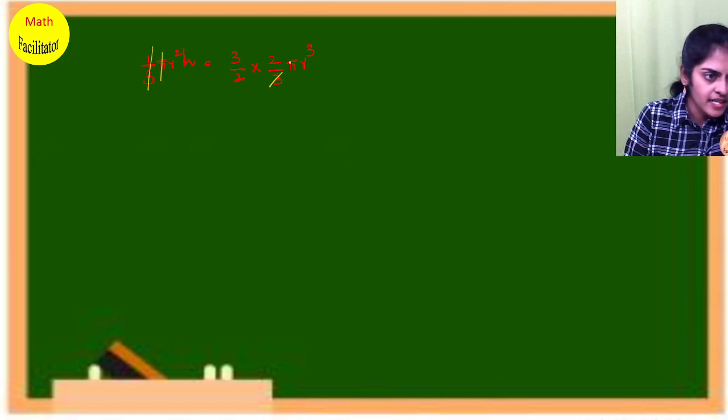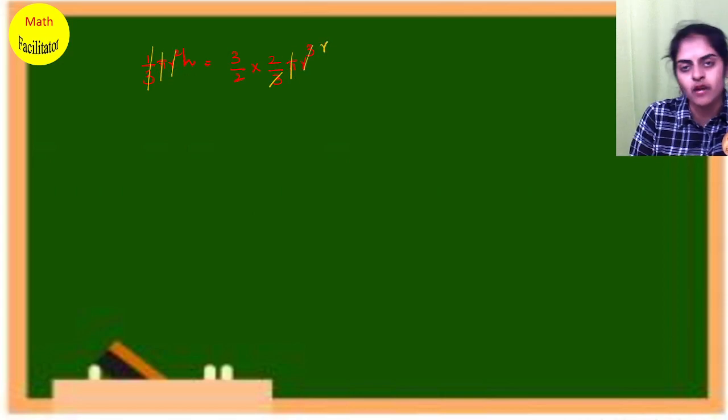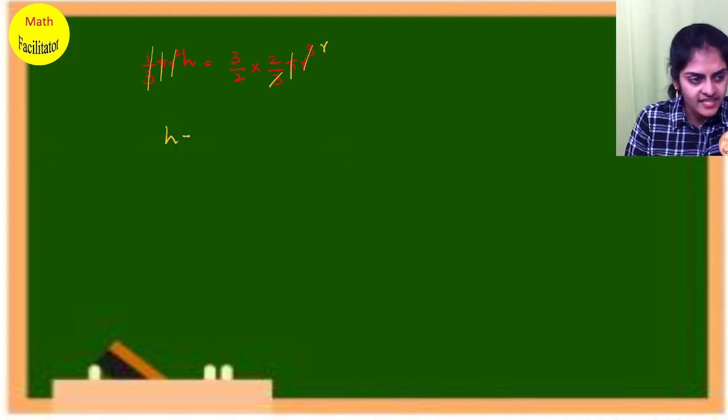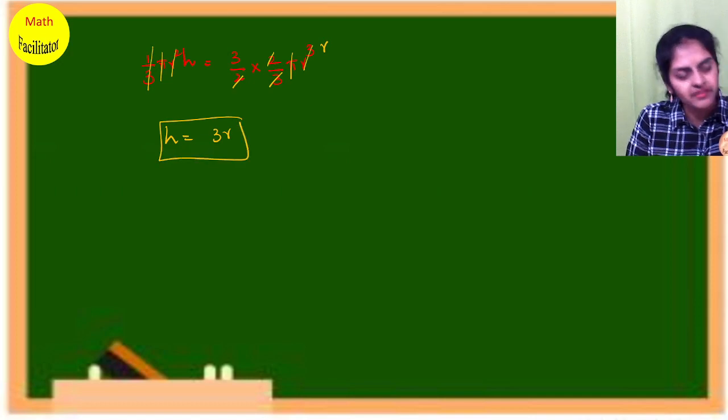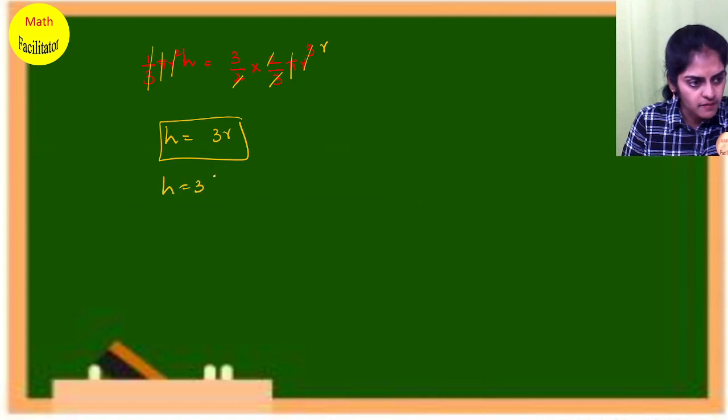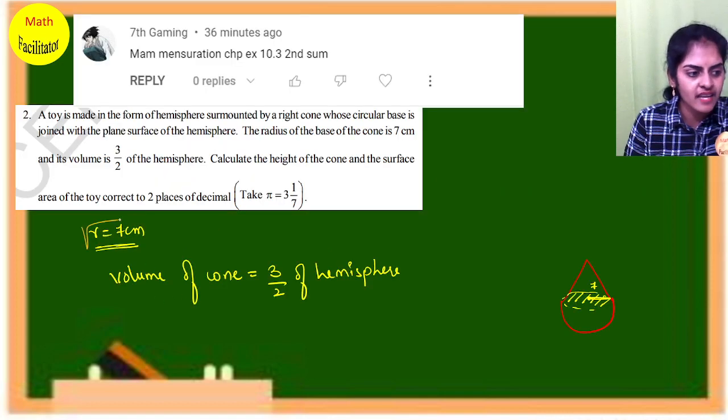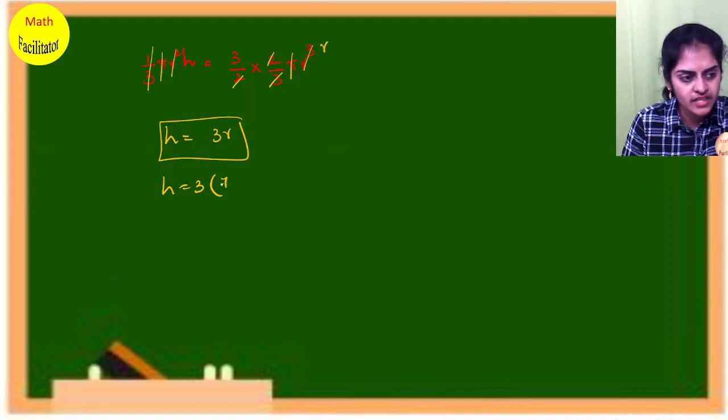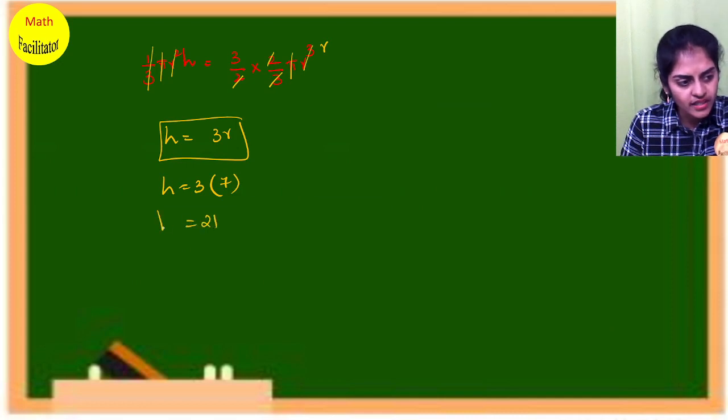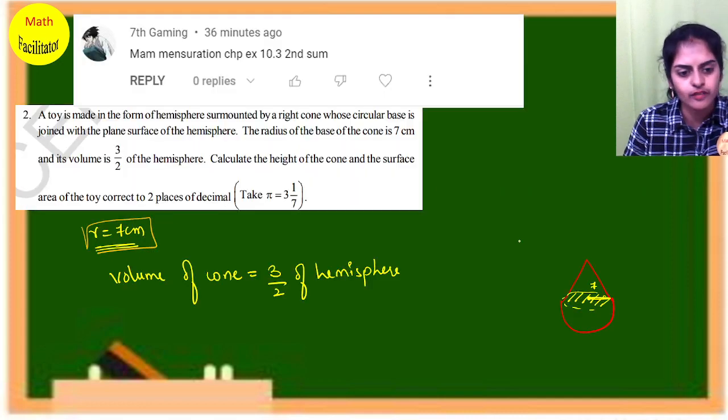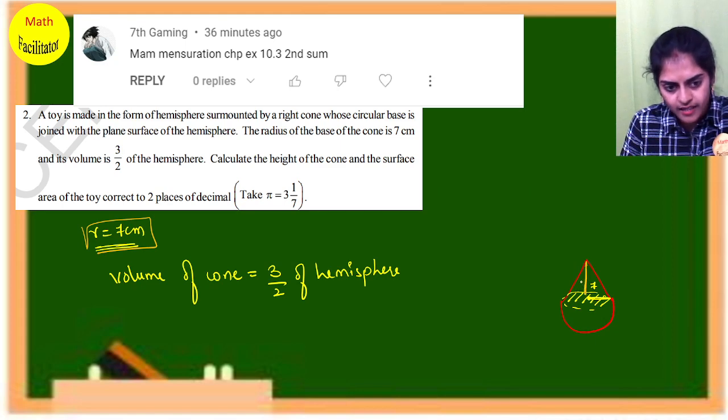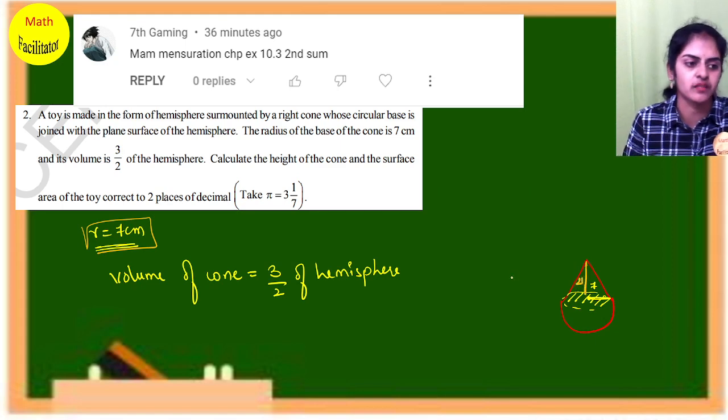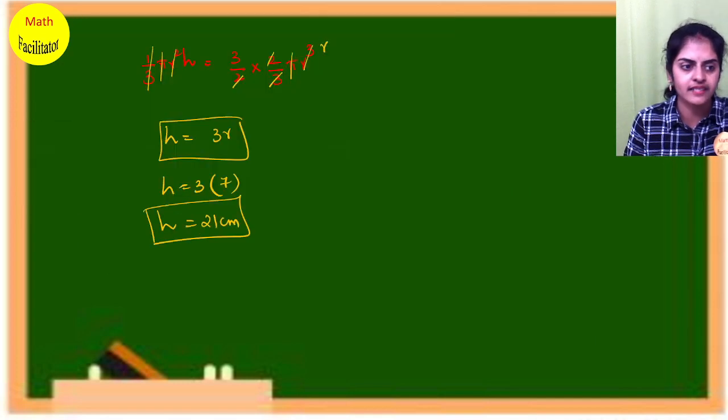h equals 3 times r. Since the radius is 7, h = 3 × 7 = 21 centimeter. So the height of the cone is 21 centimeter. They asked you to calculate the height of the cone. We got the answer.